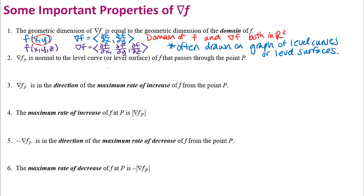If I want to show that the gradient vector is normal or perpendicular to a curve, generally what I'm going to do is show that the dot product of that gradient vector and some vector that's along the curve is zero. Thinking back to the previous chapter, we were able to parameterize curves by r(t). If I find r'(t), that would be a vector tangent to the curve. So if you could show that the dot product of r'(t) and the gradient vector is zero, that would show those two vectors are perpendicular.